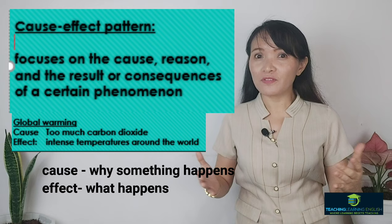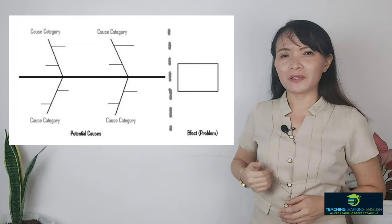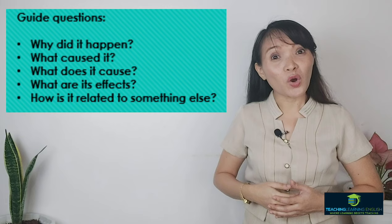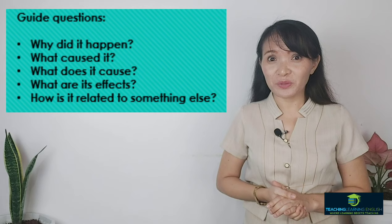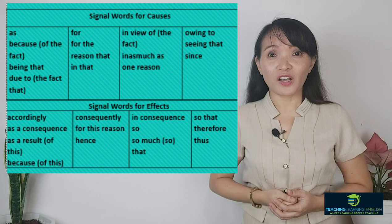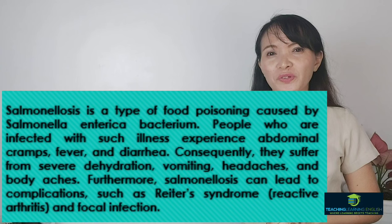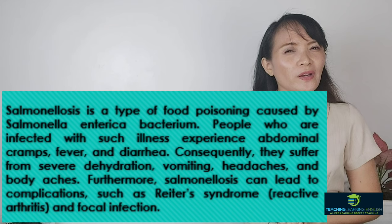The best graphic organizer to use for cause and effect is the fishbone map. You can see the cause category and the effect, which is the problem. With the cause and effect pattern, the writer can explain how an event or action leads to another. Guide questions include: why did it happen? What caused it? What does it cause? What are its effects? And how is it related to something else? Here are some signal words for causes and effects. In the example paragraph, the topic sentence states the cause, and the rest of the sentences describe the effects of the illness salmonellosis. Signal words include 'consequently' and 'furthermore.'